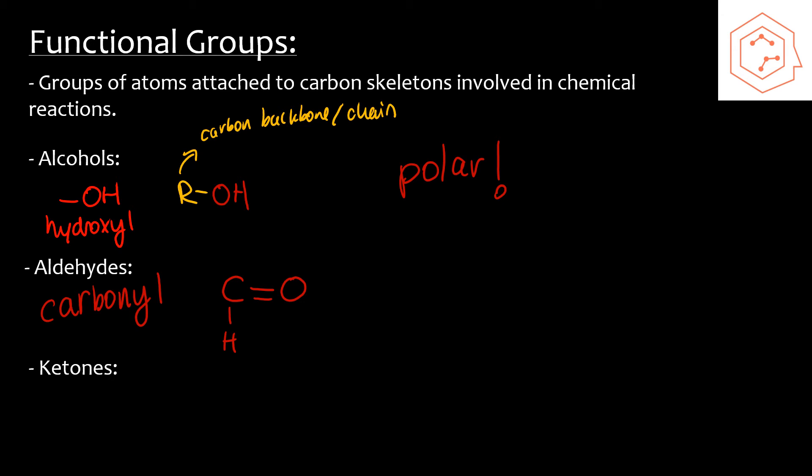Whereas in ketones, you'll have it sandwiched. The carbonyl group is sandwiched between two chains of carbons. It'll look something like this—we have R, you have the carbonyl, and then you have another R chain here. So these are ketones.